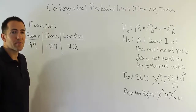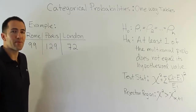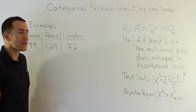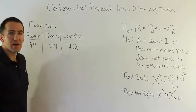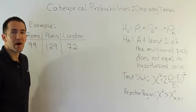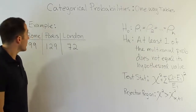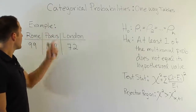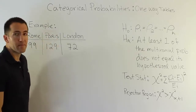Here we're talking about categorical probabilities laid out in a one-way table, and we're looking at an example to help illustrate the idea behind this hypothesis testing procedure. Let's start first of all with the data, and we'll talk about where it came from.